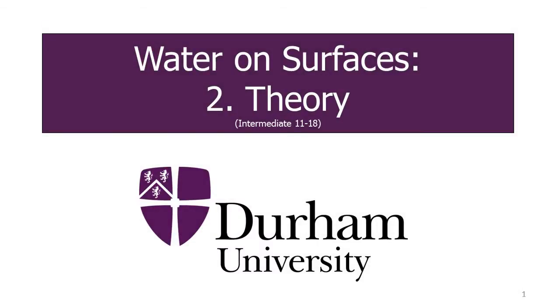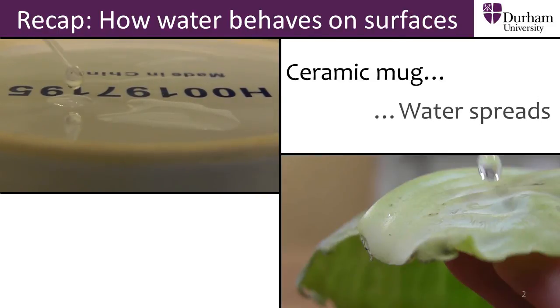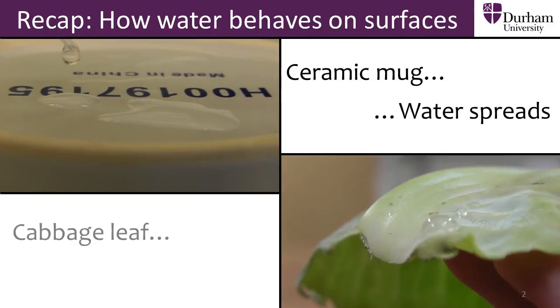In the first part of this section, we saw that drops of water behave differently on different objects. We divided surfaces into two categories. For one set of surfaces, water spreads out and wets the surface, like water on a ceramic mug.